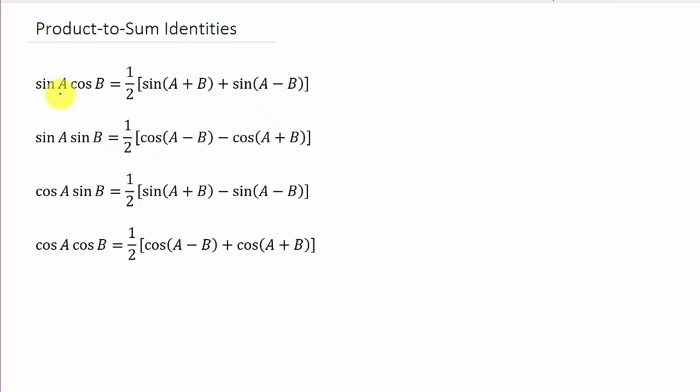All right, so for instance here we got sine a cosine b is equal to one half sine a plus b plus sine a minus b. Then you've got your other trig functions here. You've just got to pick out which one you have.